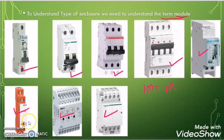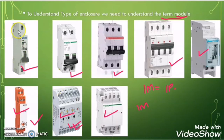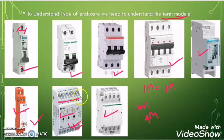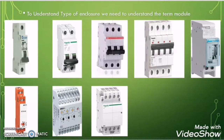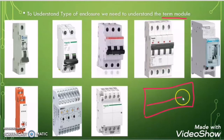This UV relay is considered as one module because it's taking the same space as a single pole MCB. But another UV relay can be considered as four modules because it's taking the same space as four pole MCB or four single pole MCBs. So if someone says a panel of 16 modules, you can imagine that panel has space to install 16 modules.